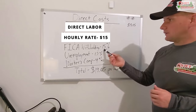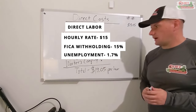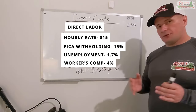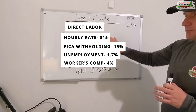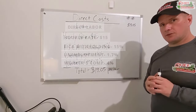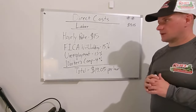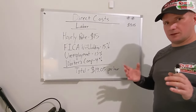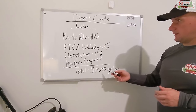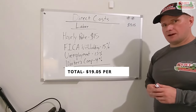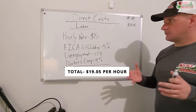This is the calculation you would go through for your direct labor. So let's say you're paying somebody $15 an hour. On top of that, you're going to have other costs like their FICA withholdings, unemployment, workers comp, things like that. If you add all those percentages to the base hourly rate of $15, you're going to come to a total of $19.05 per hour. And that is the direct cost hourly cost for your employee. If you have two, you're going to do this for both of them.